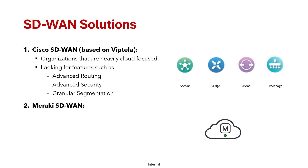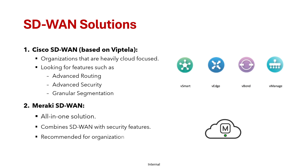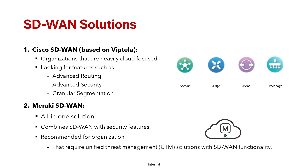The second solution is Cisco Meraki SD-WAN — a simple, all-in-one solution that combines SD-WAN with security features. It is recommended for organizations that require unified threat management (UTM) solutions with SD-WAN functionality, or for existing Cisco Meraki customers looking to expand to SD-WAN. UTM is an all-in-one security solution that includes firewall, VPN, antivirus, and web content filtering. However, for the CCNP Encore curriculum, we will focus only on Cisco SD-WAN based on Viptela.